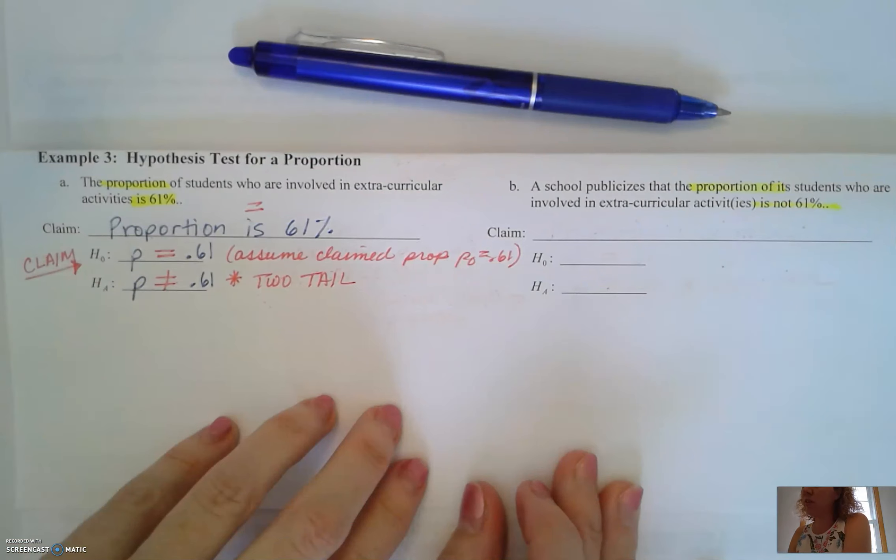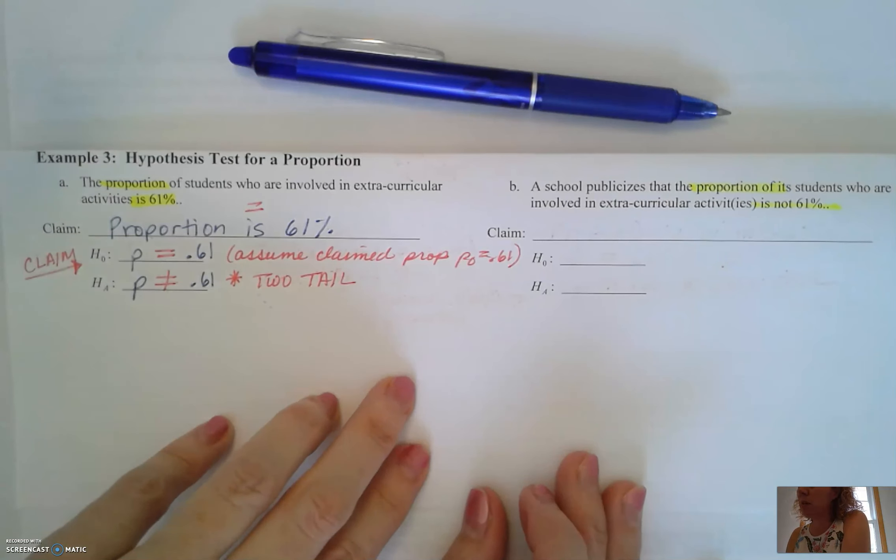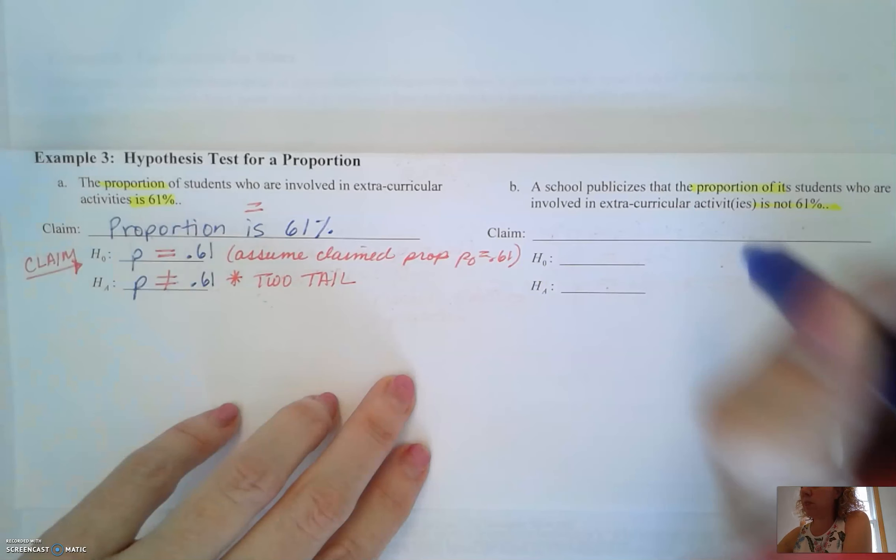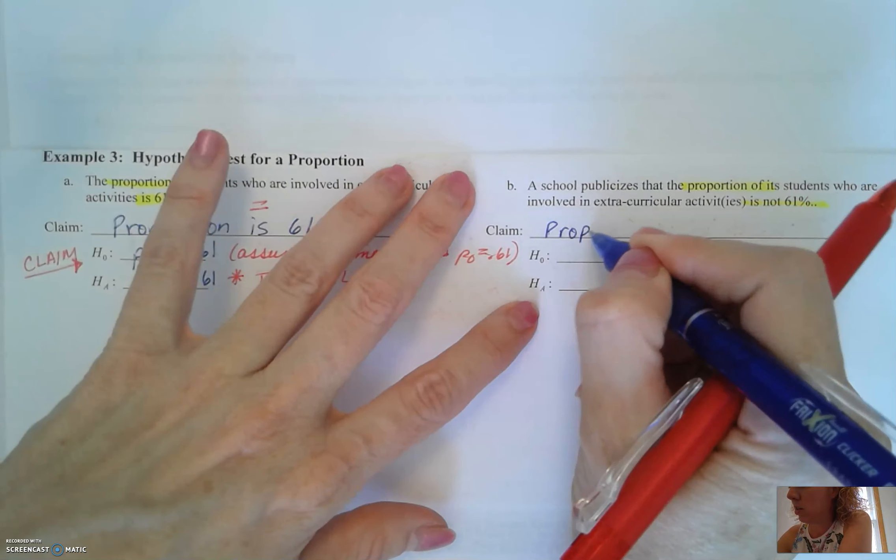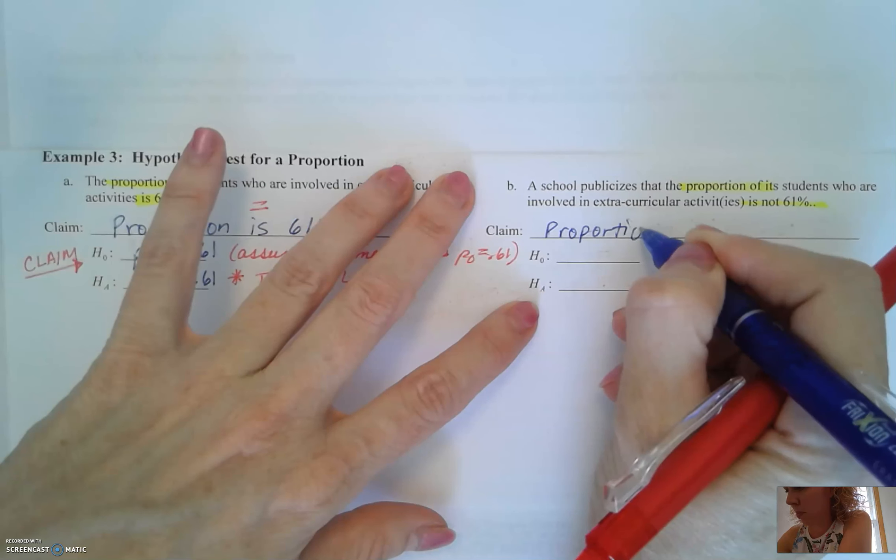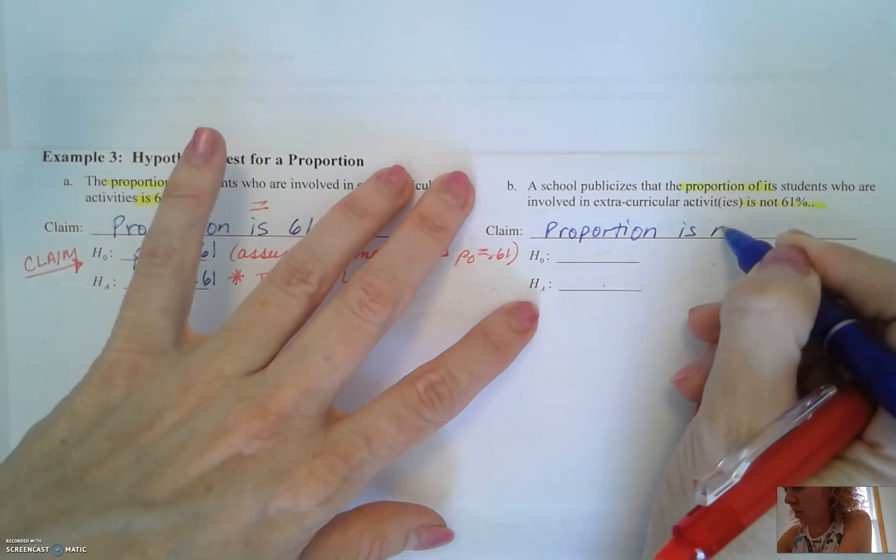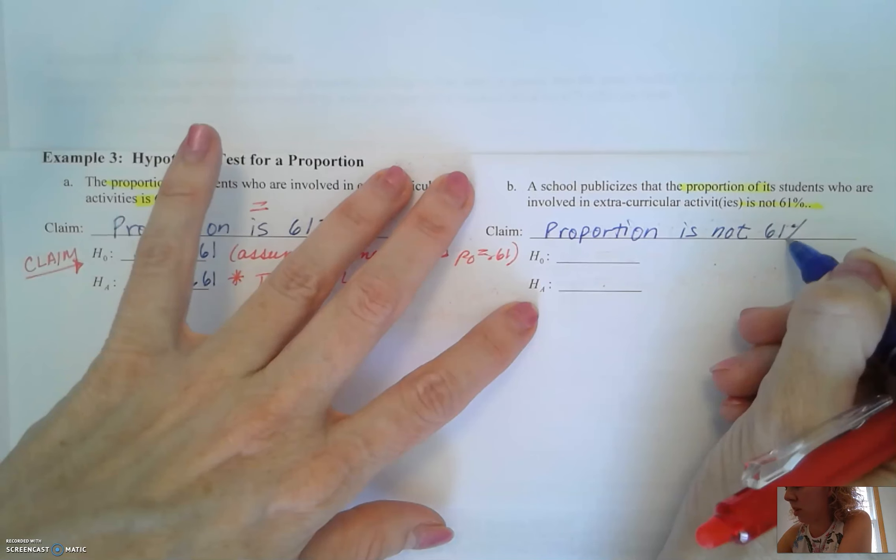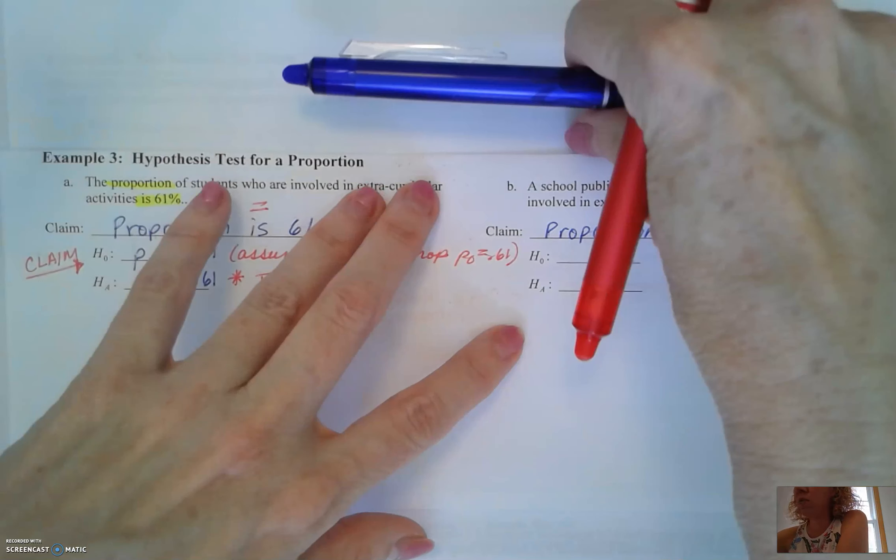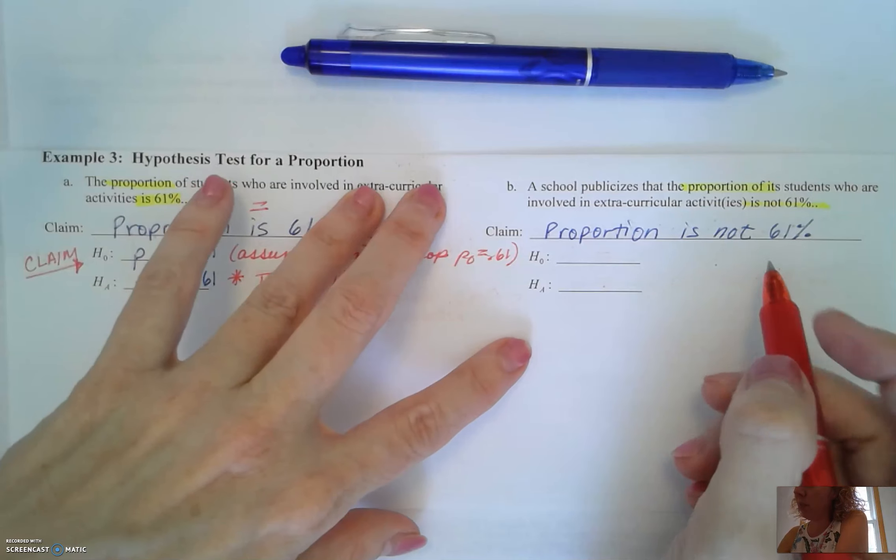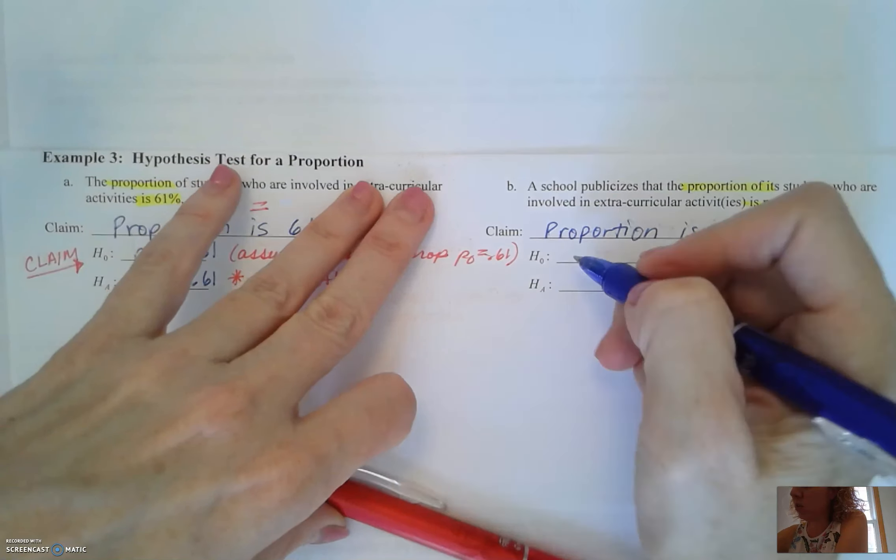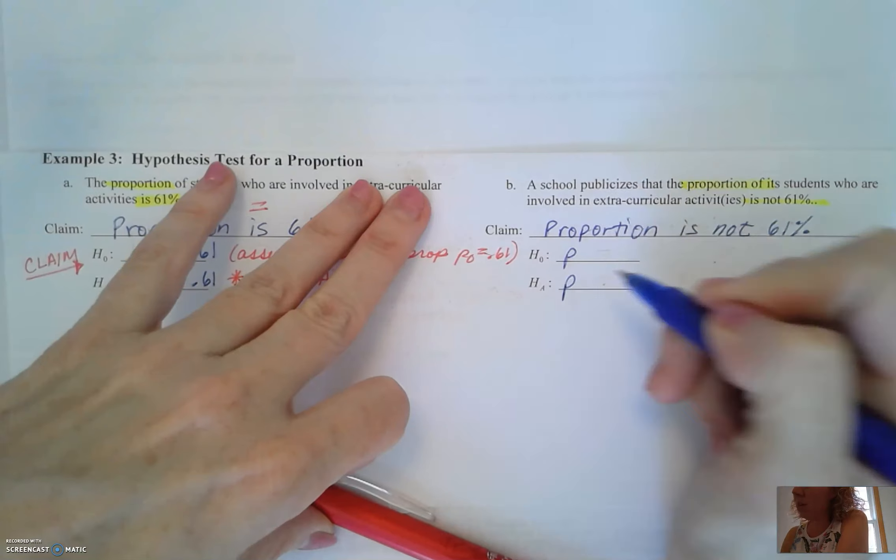Part B is very similar. It says a school publicizes that the proportion of its students who are involved in extracurricular activities is not 61%. So here the proportion is not 61%. We're testing a claim about proportion again and we've included the inequality component.